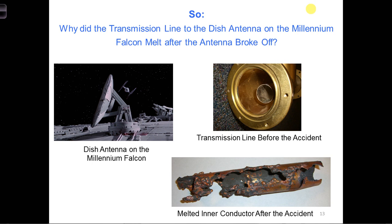In the same manner, the current also reflects from the end of the transmission line, but with a reflection coefficient of minus one instead of one as for the voltage. As a result, the current phasors are anti-parallel at the load, but then they are parallel at a quarter wavelength from the load, which means the current is doubled at a quarter wavelength from the load.